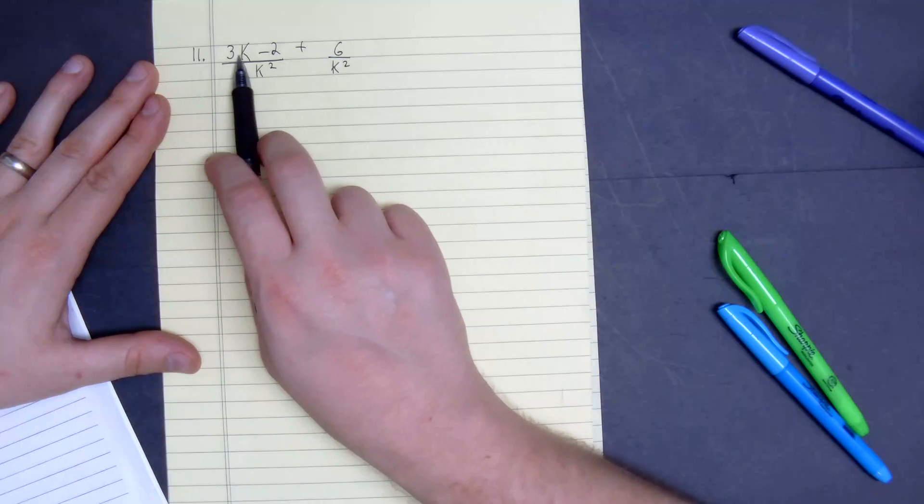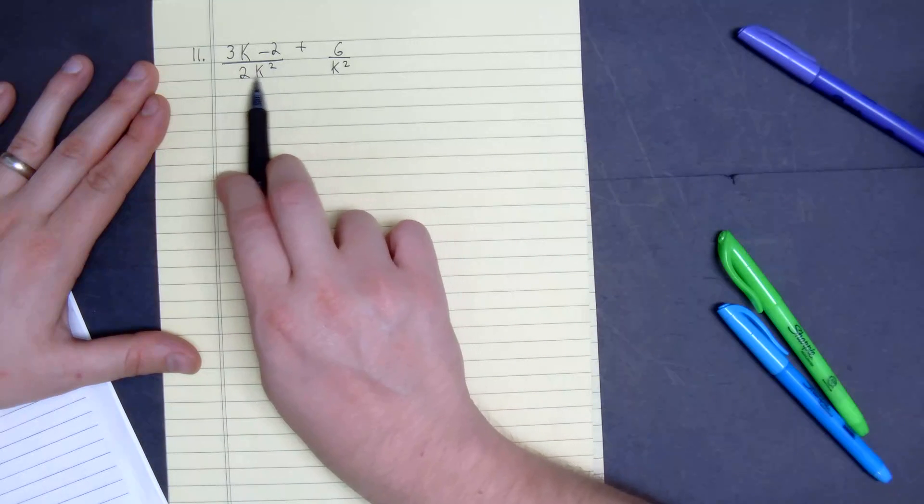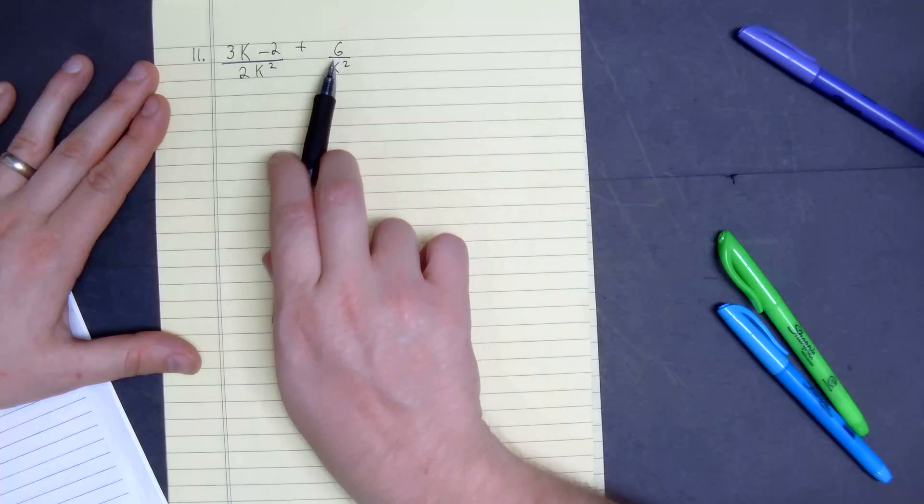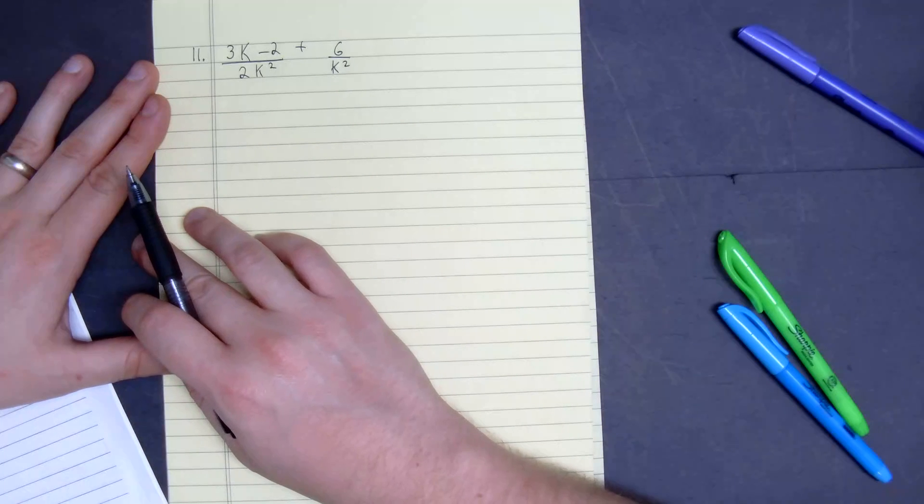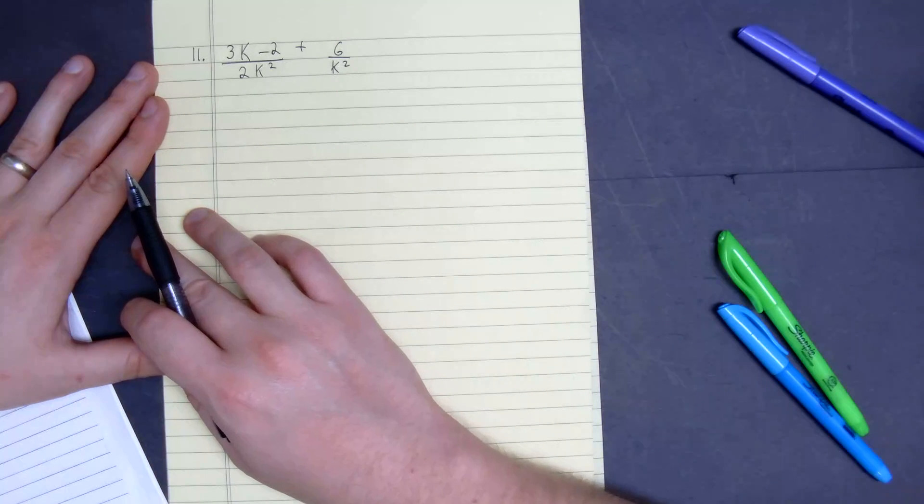We'll look at number 11. Number 11 says 3k minus 2 divided by 2k squared plus 6 divided by k squared. As I can see right away, they don't have a common denominator.